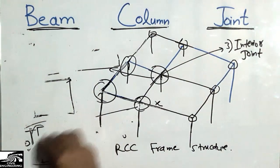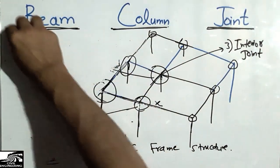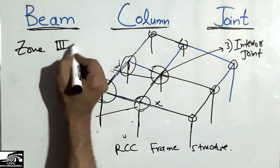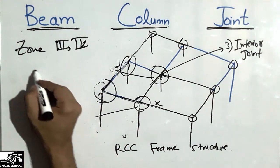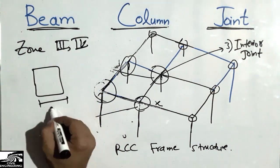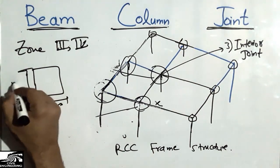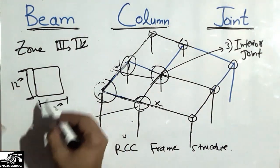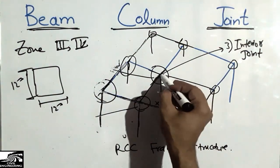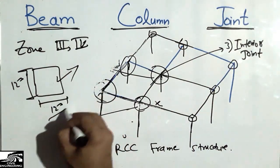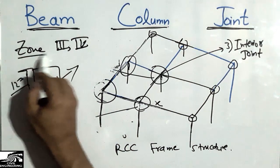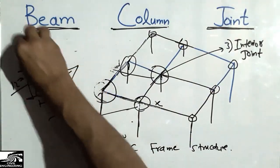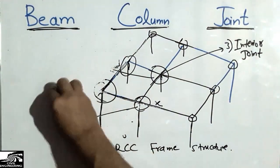According to the American standard, if your structure is in seismic Zone 3 or Zone 4, you must provide a column width of at least 12 inches in both directions at the beam-column joint.